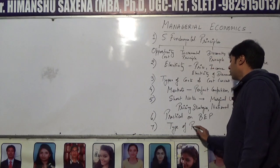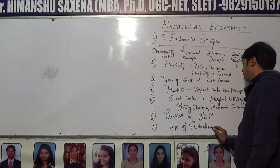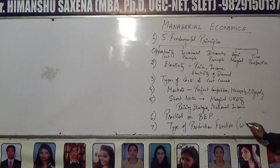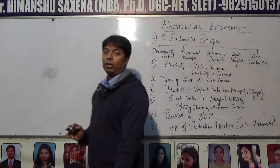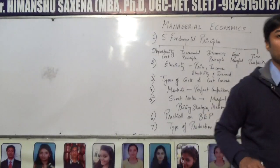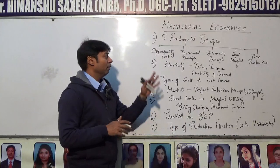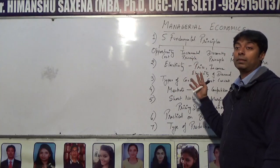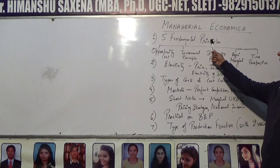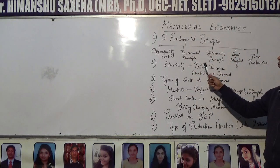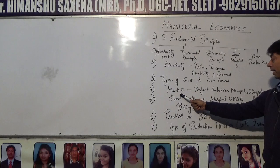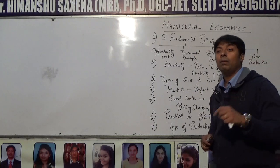The last topic is types of production function, but with a restriction of having two variables — types of production function comprising two variables. These are personal favorite topics which immediately come to mind for the subject of economics: five fundamental principles, elasticity, price and income elasticity of demand, types of costs, cost curves, and markets covering perfect competition, monopoly, and oligopoly.